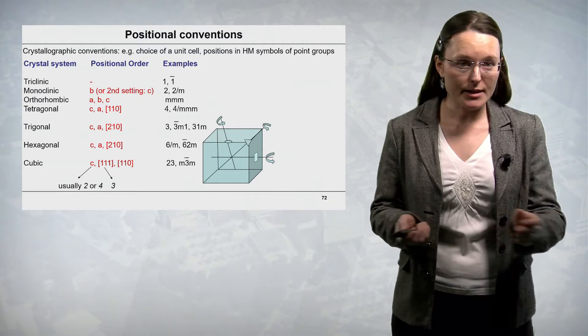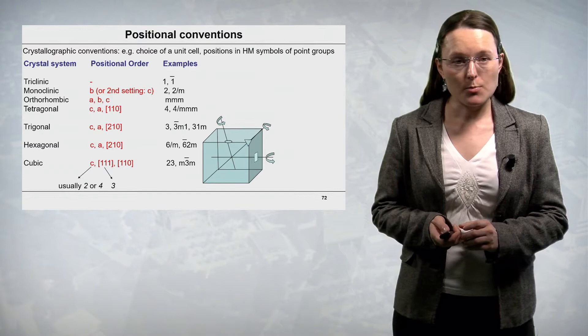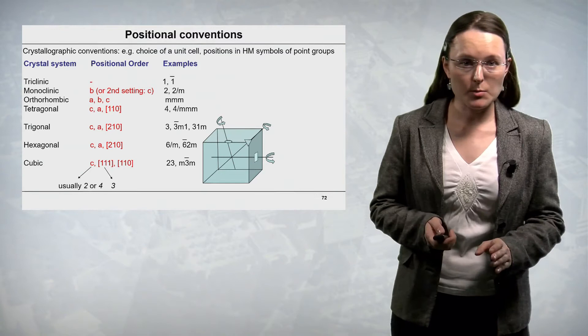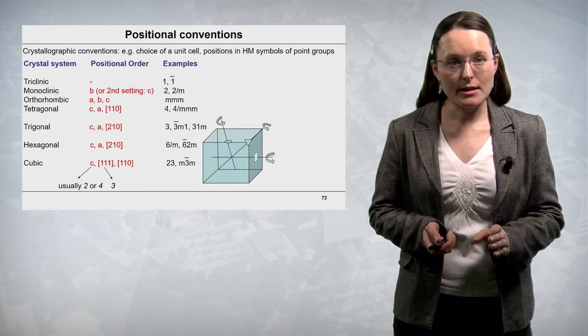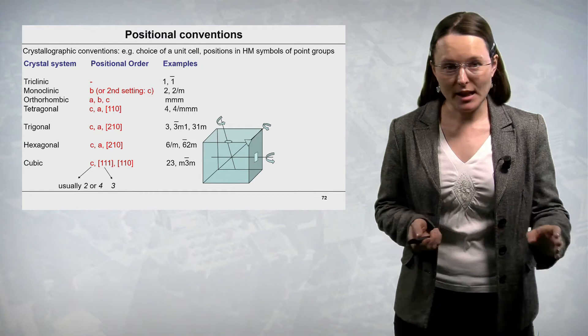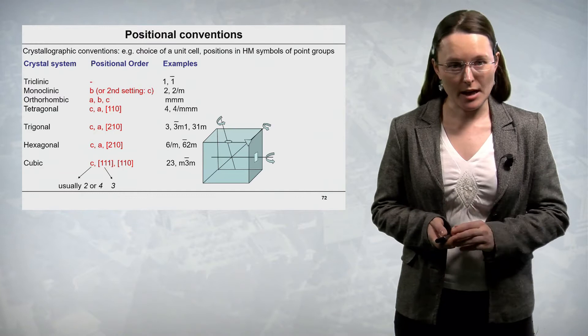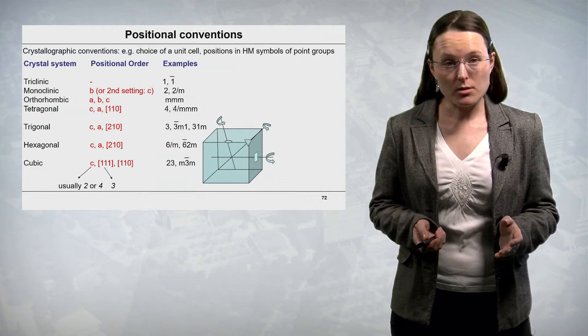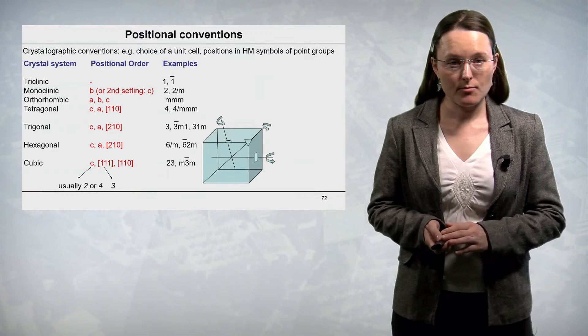In the cubic crystal system, the highest symmetry crystal system, the first symbol corresponds to the C direction and is usually a 2-fold or 4-fold symmetry axis. The second symbol corresponds to the 1,1,1 crystallographic direction — the body diagonal of the cube — and is always a 3-fold symmetry axis. The third symbol, if present, corresponds to the crystallographic direction 1,1,0. I also show on this slide some symmetry elements of the cube as a reminder.